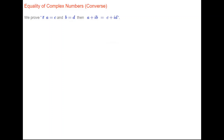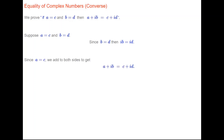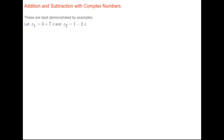For the second part of the proof, we prove: if a equals c and b equals d, then a plus ib must equal c plus id. This is quite easy. Suppose a equals c and b equals d. Since b equals d, we multiply by i to get ib equals id. Since a equals c, we add those to both sides to get a plus ib equals c plus id, which is what we want.